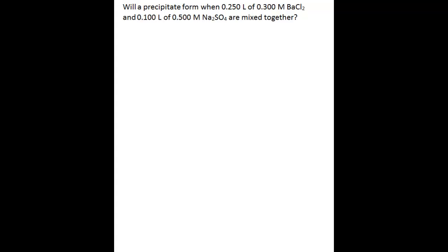The problem we're going to work on is: will a precipitate form when 0.250 liters of 0.300 molar barium chloride and 0.100 liters of 0.500 molar sodium sulfate are mixed together?